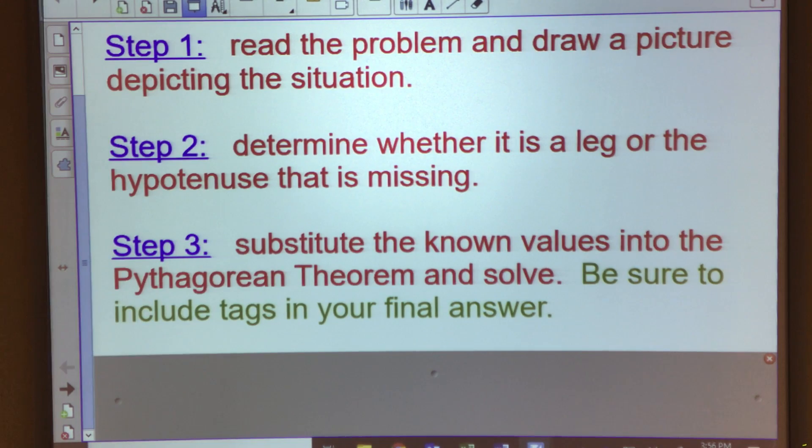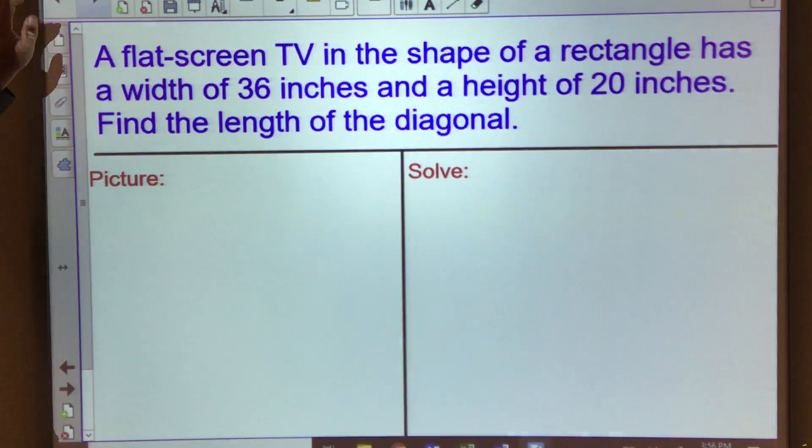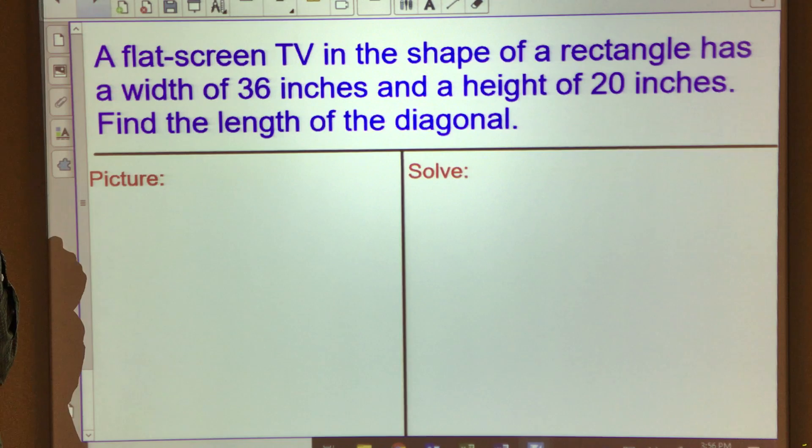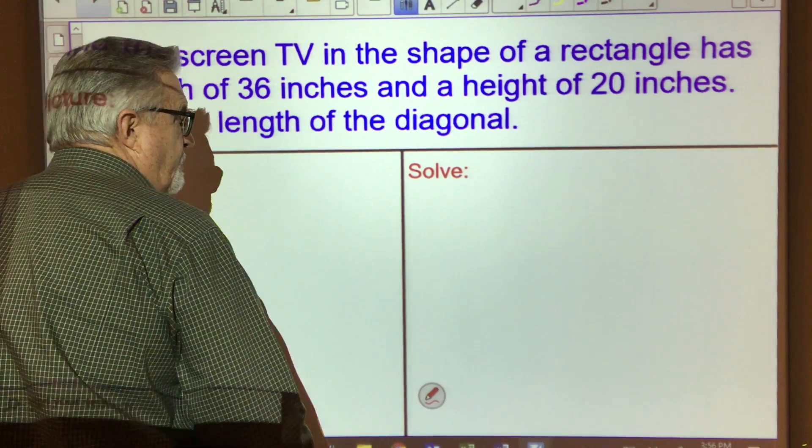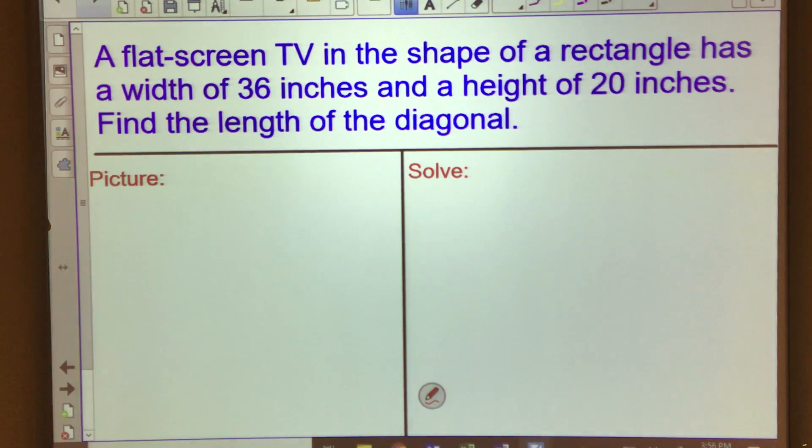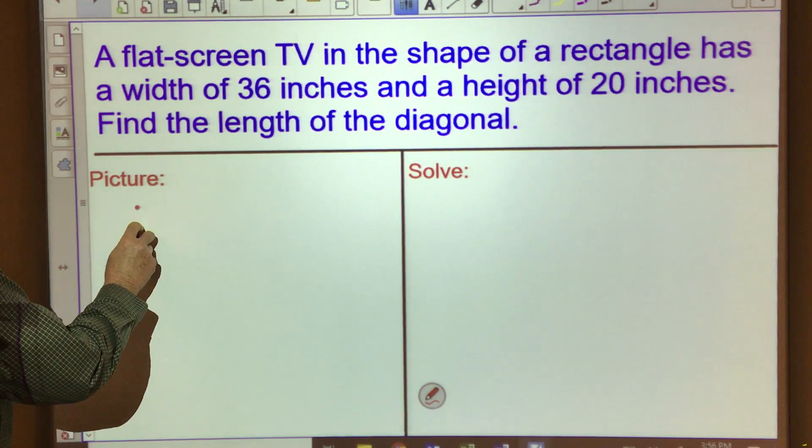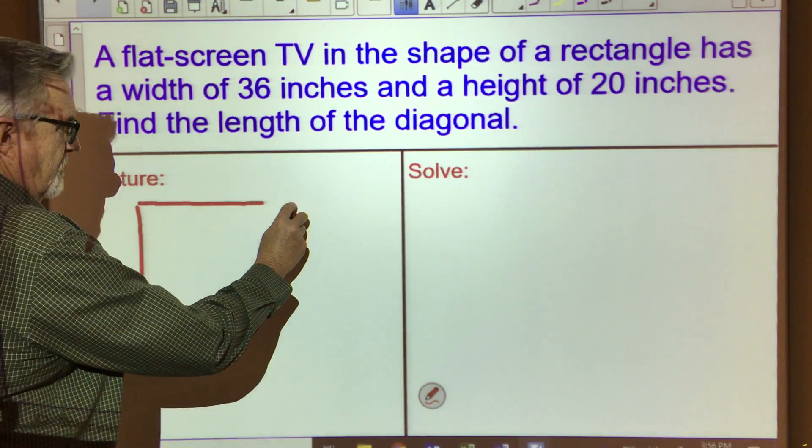Here's our first situation. We've got a flat screen TV and it's in the shape of a rectangle. It has a width of 36 inches and a height of 20 inches and we're trying to find the diagonal length. So when we sketch this, it's in the shape of a rectangle and the rectangle has a width of 36 and a height of 20.